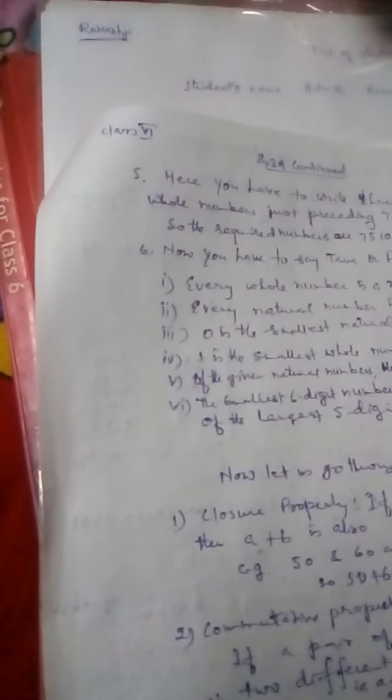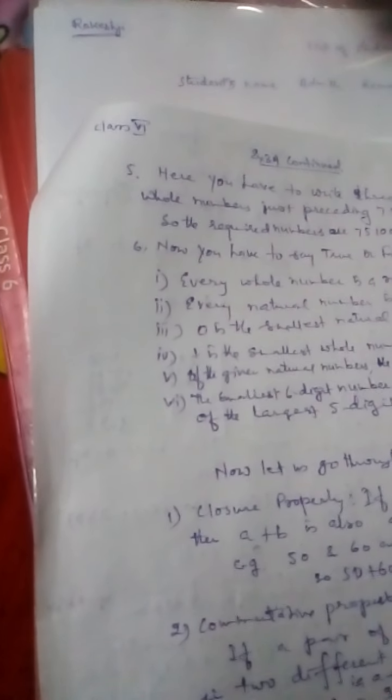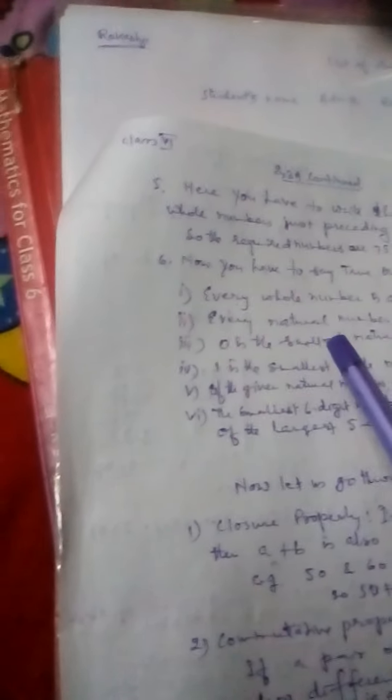Now you have to say true or false. Every whole number is a natural number. It is a false statement. Every whole number cannot be a natural number, as you have seen about zero. Then, every natural number is a whole number. This is true.